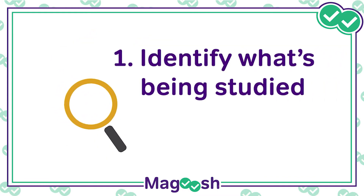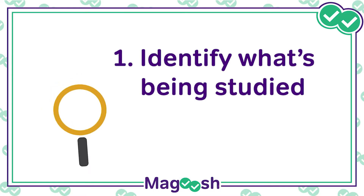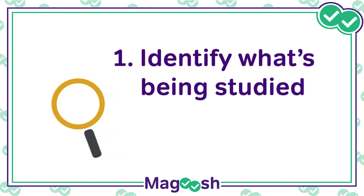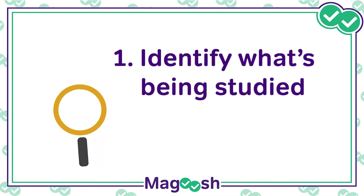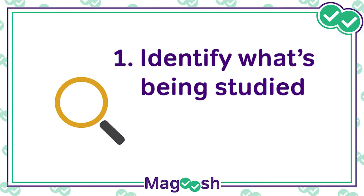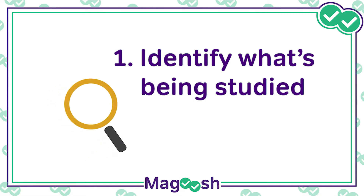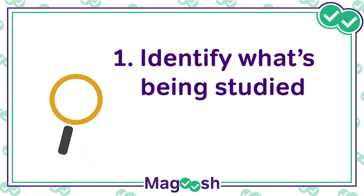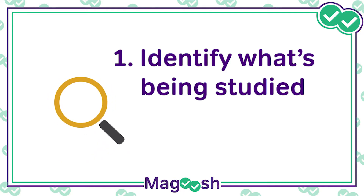Tip 1: Identify what's being studied. This information is usually located in the very first paragraph. What is the main subject the students or scientists are studying? This paragraph will often include unfamiliar scientific terminology, but don't panic — any new vocabulary will eventually be defined by the passage. Locate and underline the phenomenon before you move on to the viewpoints.